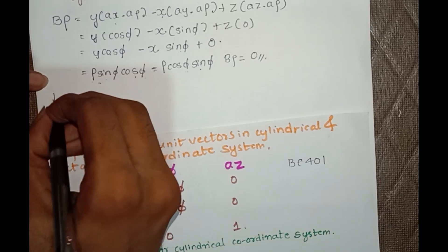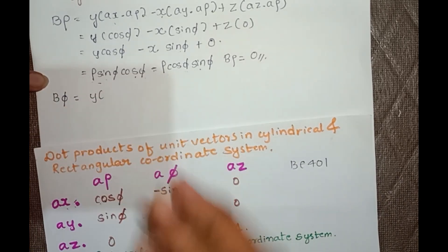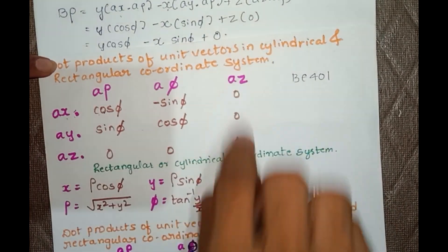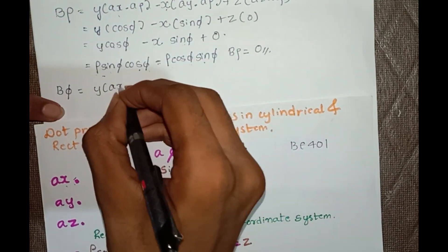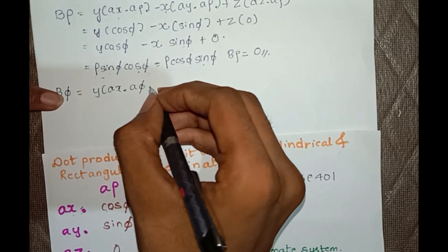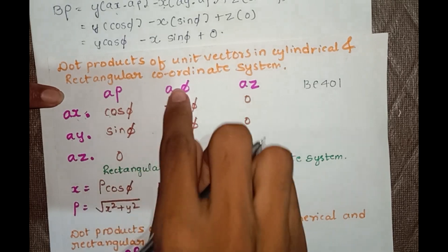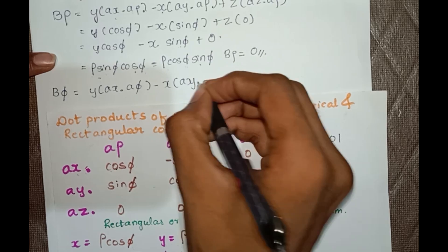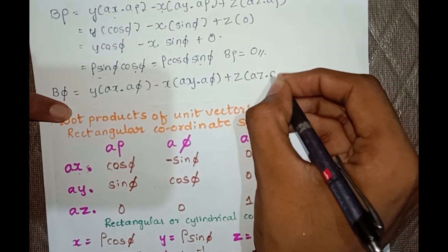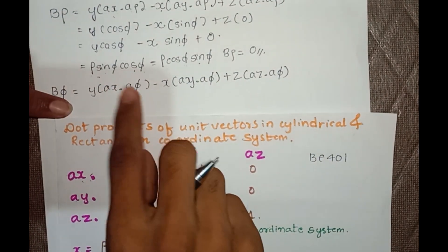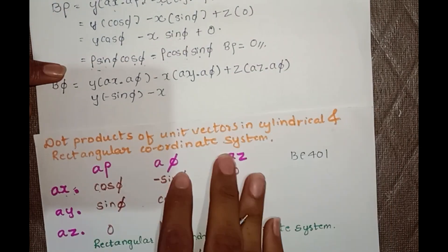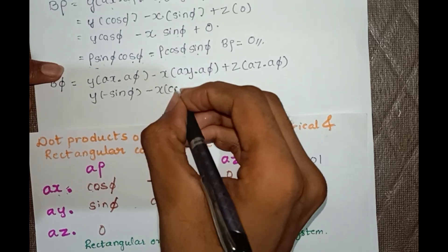Next we deal with Bφ: Bφ = y·(ax·aφ) + (−x)·(ay·aφ) + z·(az·aφ). Substituting: ax·aφ = −sinφ, ay·aφ = cosφ, az·aφ = 0. So Bφ = y·(−sinφ) − x·(cosφ) + 0.